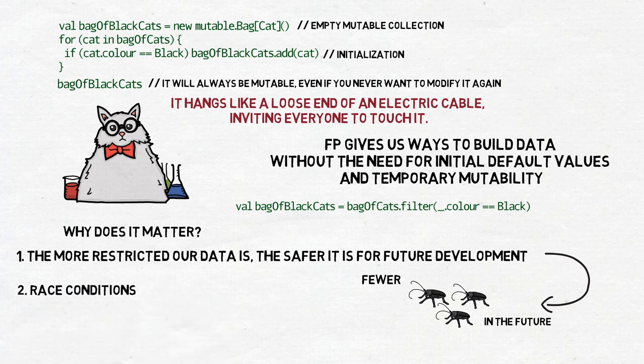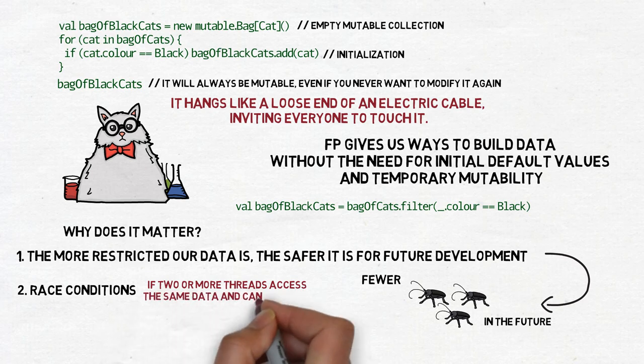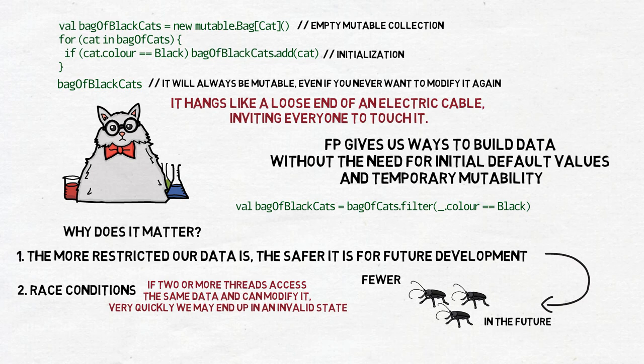Second, race conditions. If two or more threads access the same data and can modify it, very quickly we may end up in an invalid state and the exact reason for it will be difficult to debug. We try to prevent this using mutexes, monitors and other patterns. Making the data immutable does not solve all our problems, but it certainly makes our work easier.